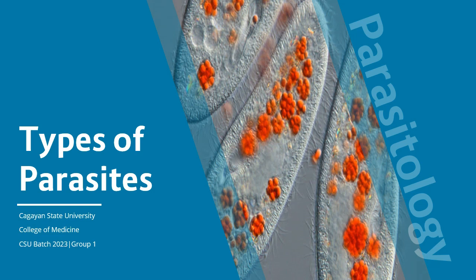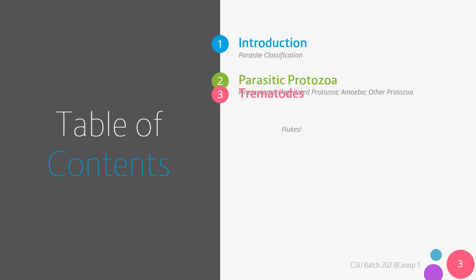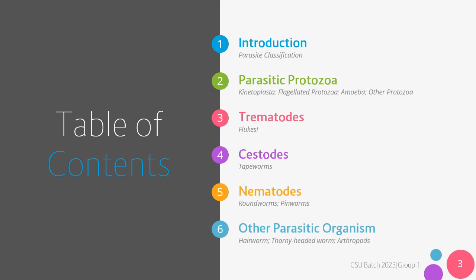In this report, we'll be tackling a general overview of what parasites are, their classifications, and then going on to the more specific components of each classification. These will include the parasitic protozoa, which include kinetoplasta, flagellated protozoa, amoeba, and other related protozoa, trematodes, which include deflukes, cestodes, which include tapeworms, nematodes, which include roundworms and pinworms, and other parasitic organisms like the hairworm, the thorny-headed worm, and the arthropods.